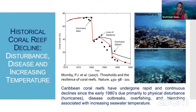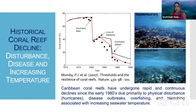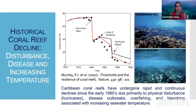And finally, we have bleaching, which is associated with increased sea surface temperature and global climate change effects. All of these impacts have led to the decline in coral cover and have driven shifts in the abundances and species distributions across their geographic ranges.